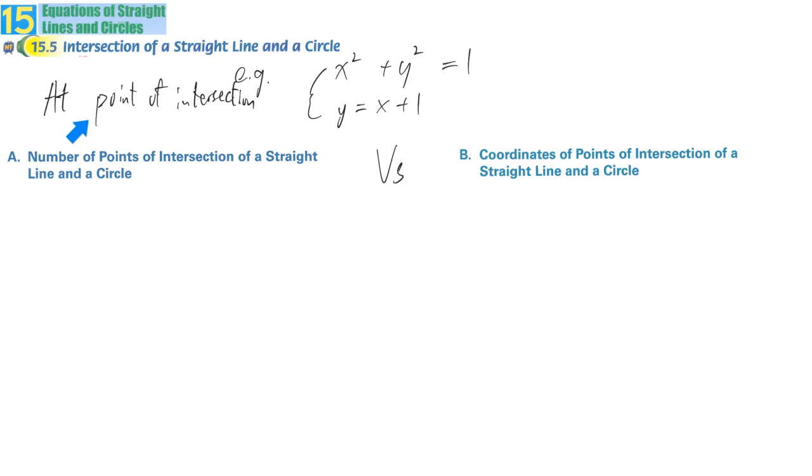Last lesson, we talked about how to find the exact position of a point of intersection by solving simultaneous equations. It fulfills the circle requirement and at the same time fulfills the straight line requirement. That's why we're talking about the intercept point. In order to find the exact position of the intercept point, we solve this simultaneous equation.